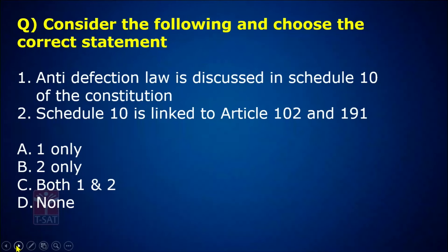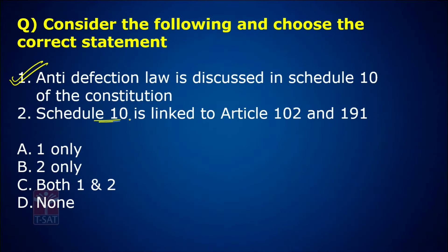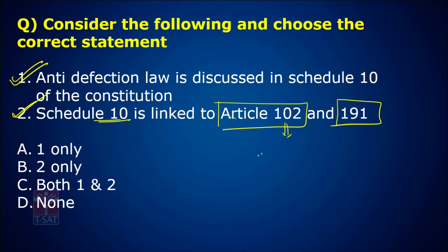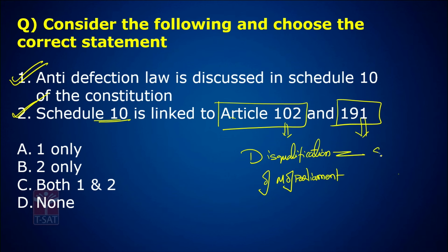Consider the following and choose the correct statement. Anti-defection law is discussed in Schedule 10 of the constitution — absolutely correct. Schedule 10 is linked to Article 102 and Article 191. Article 102 talks about disqualifications of members of parliament, and Article 191 talks about disqualifications of members of state legislature. Both statements are correct.